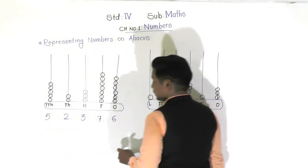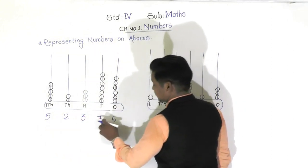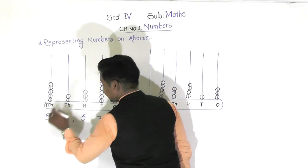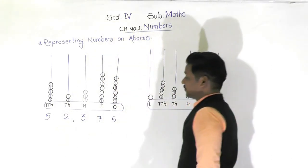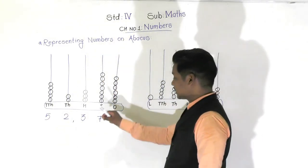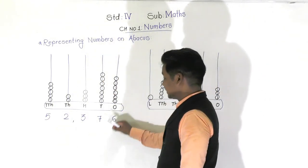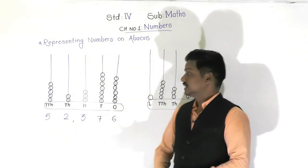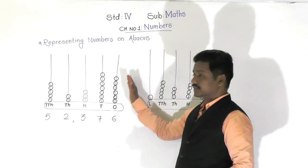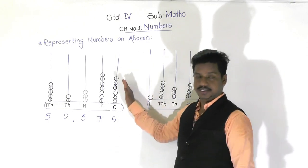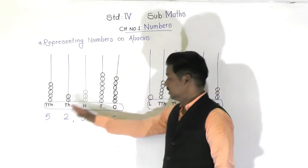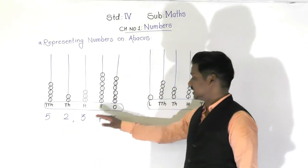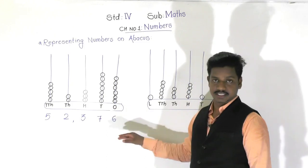So it represents the digit 5. We have the places: ones, tens, hundreds, thousands, and ten thousands - giving us the number 52,376. So we can say that this abacus represents the number 52,376.